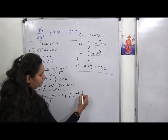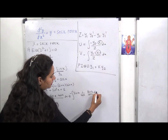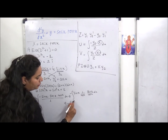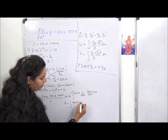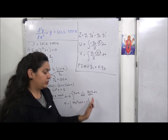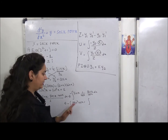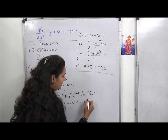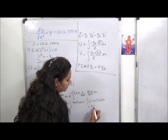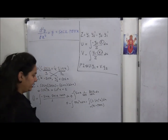So the integrand becomes −sin x · (1/cos x) · (sin x/cos x) = −sin²x/cos²x = −tan²x. We substitute tan²x = sec²x − 1, so −tan²x = 1 − sec²x. The integral becomes ∫(1 − sec²x) dx = x − tan x. So u = x − tan x.